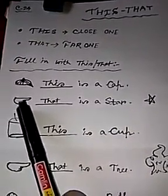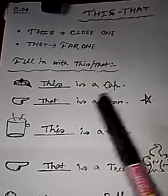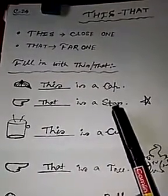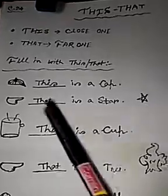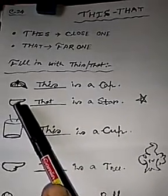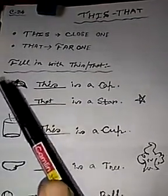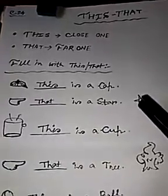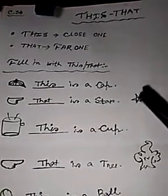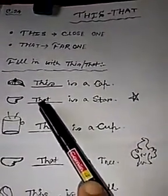The fingers indicating the star - the star is far away, so that is a star. I repeat, the fingers are signaling that the star is far away. That is the far one, so use 'that is a star'.